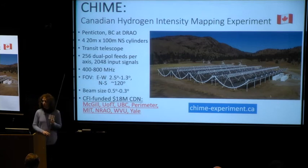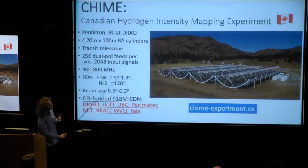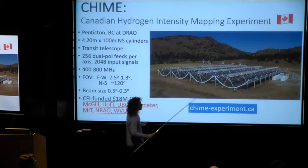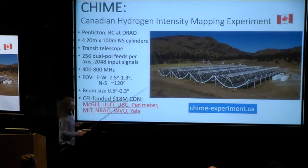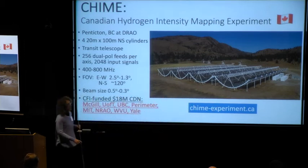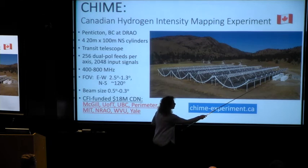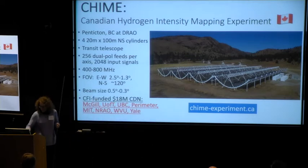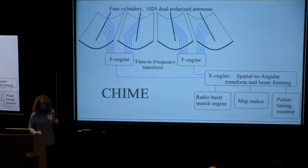CHIME is a radio telescope in Penticton, British Columbia, made of four stationary cylinders that are 20 meters by 100 meters — an area of five hockey arenas in Canadian units. It's a transit telescope oriented north to south, so the sky rotates overhead. Each cylindrical axis has 256 dual-linear polarization antennas all combined into a massive correlator sitting in large shipping containers, where the FRB searching is done. We operate from 400 to 800 megahertz.